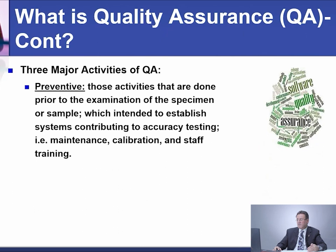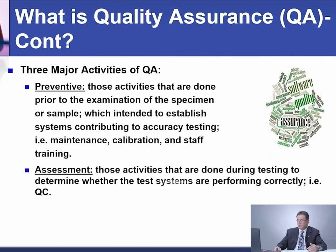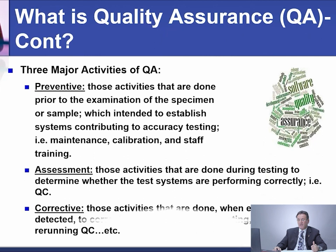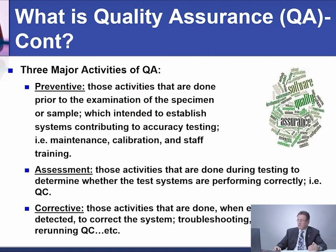There are three major activities of quality assurance: preventive, assessment, and corrective. The preventive activities are those done prior to the examination of the specimen or sample, intended to establish systems contributing to accuracy — like maintenance, calibration, and staff training. Assessment activities are done during the testing of the specimen to determine whether the test systems are performing correctly, like QC.